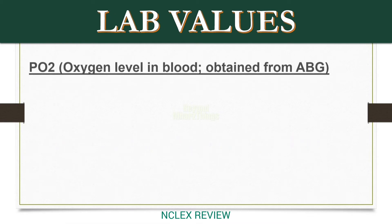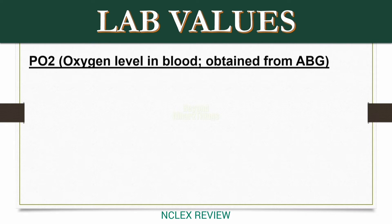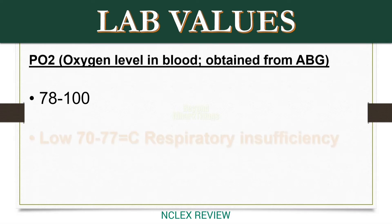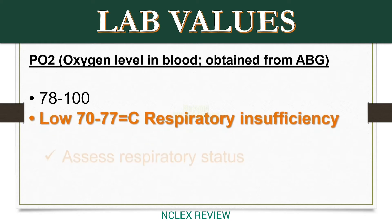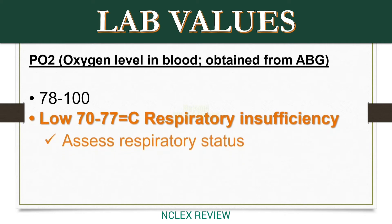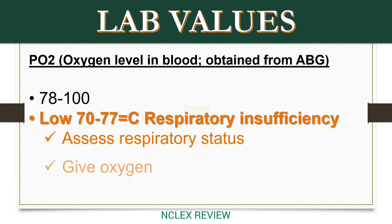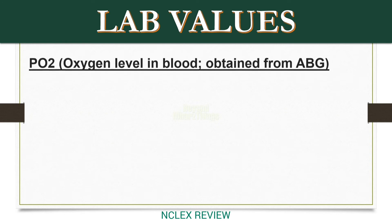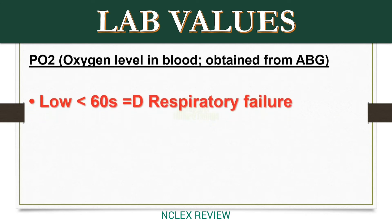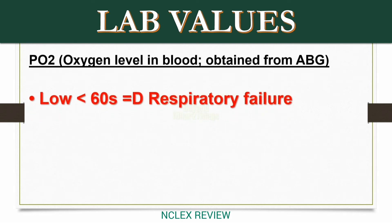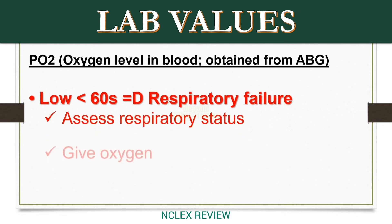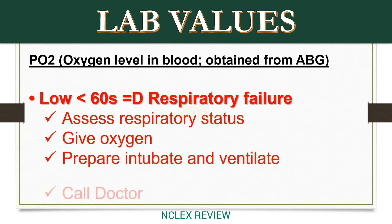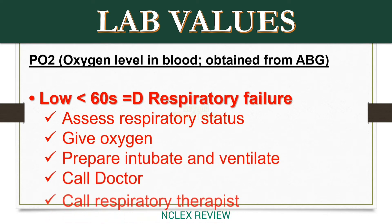PO2 — oxygen level in blood, obtained from ABG. Normal: 78 to 100. Low 70 to 77 equals C — respiratory insufficiency. Assess respiratory status, give oxygen. Low less than 60s equals D — respiratory failure. Assess respiratory status, give oxygen, prepare to intubate and ventilate, call doctor and call respiratory therapist.